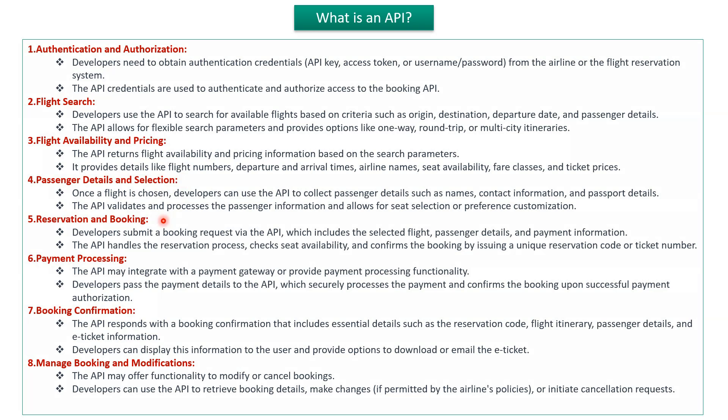The fifth one is the reservation and booking API. Developers submit a booking request via API, which includes the selected flight, passenger details, and payment information. This API handles the reservation process, checks seat availability, and confirms the booking by issuing a unique reservation code or ticket number.